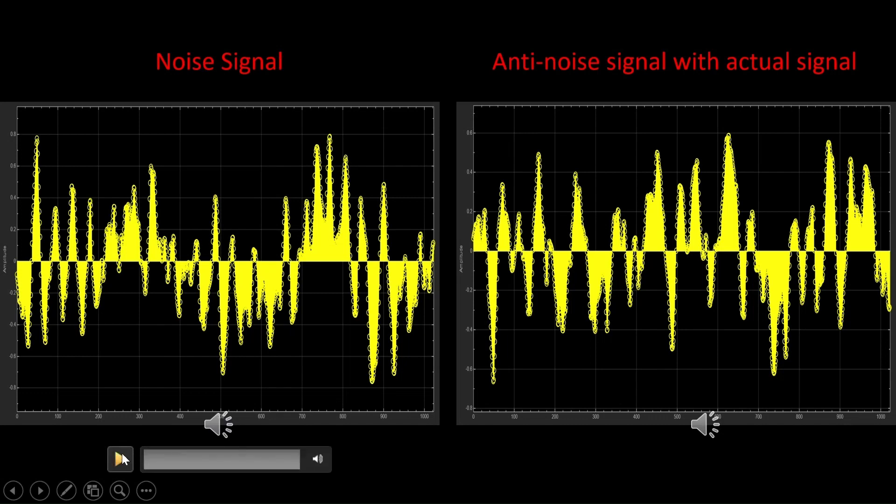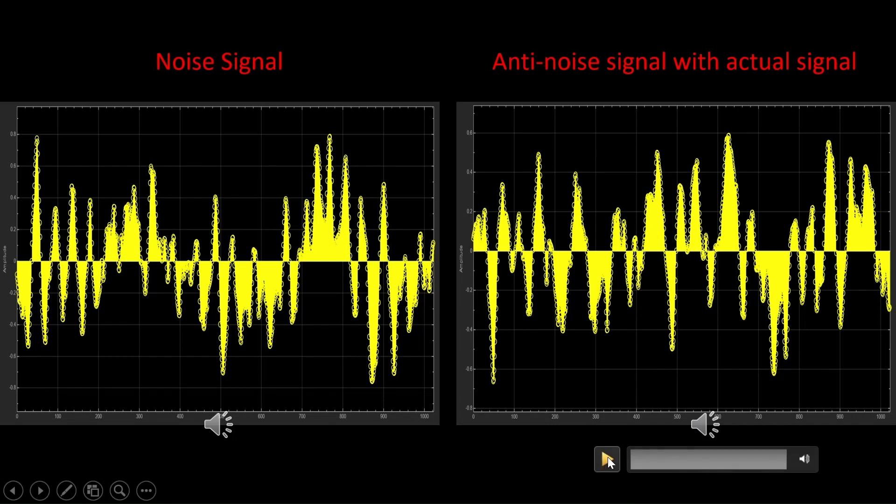Let us listen to our noise signal. This is our noise signal. It is a bunch of cars in traffic. And this is our anti-noise signal which is superimposed on the audio signal. As you can see there is some disturbance when you listen to this. That is because of the superimposition of the anti-noise signal, that is the inverse of this noise signal.